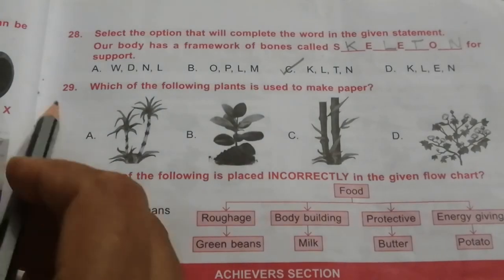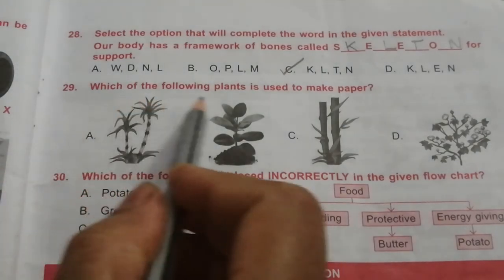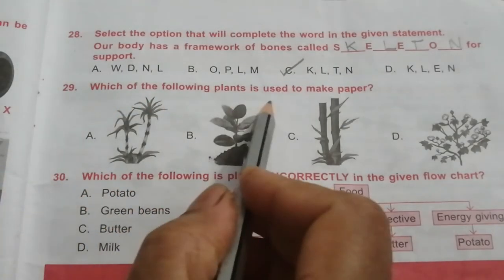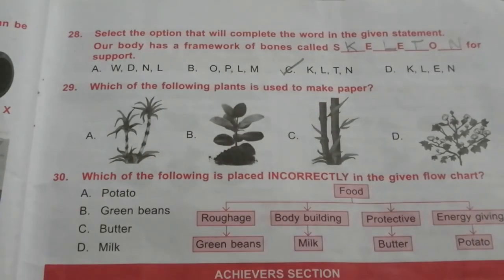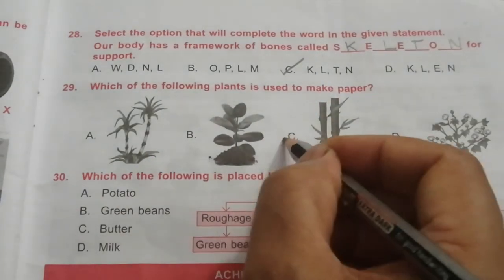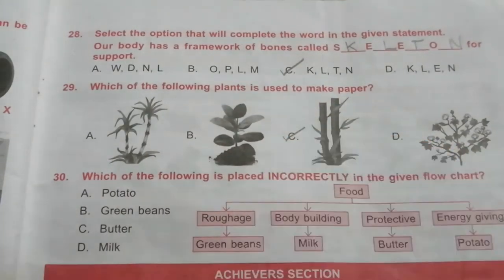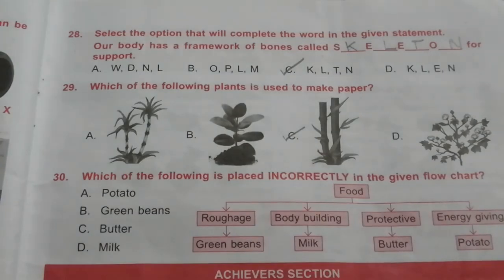Question 29: Which of the following plants is used to make paper? The answer is C: bamboo.